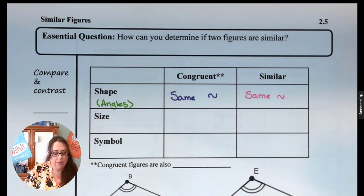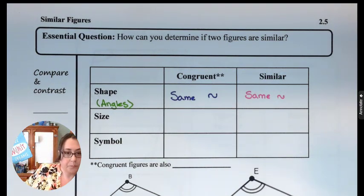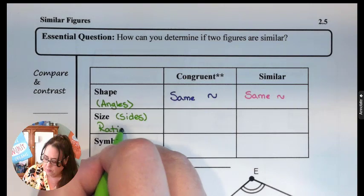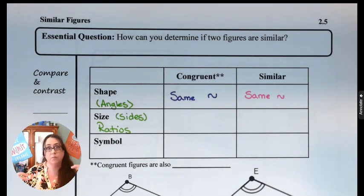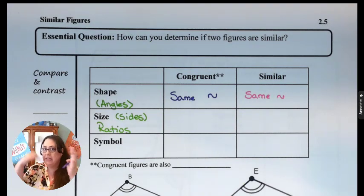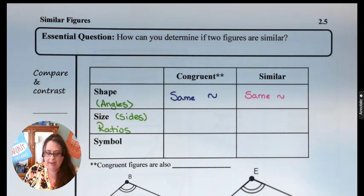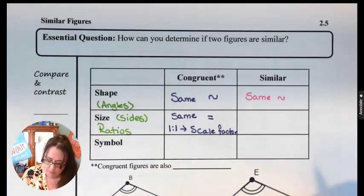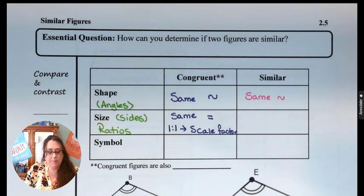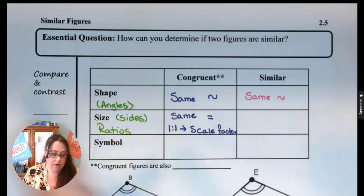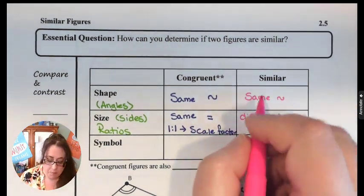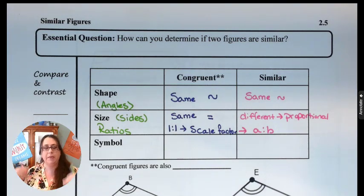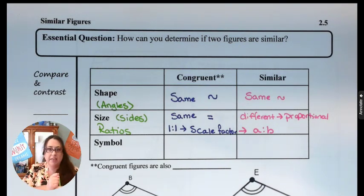Where things get a little bit different is when we're talking about size. When talking about size in congruent figures, we talk about the sides — specifically the ratios of the sides. We compare the ratio of side A to side A in both figures. In congruent figures, it's a one-to-one ratio, which we call the scale factor. When figures are similar, the sides are proportional but different — maybe a three-to-four ratio, one-to-two, twice as big, or half the size.